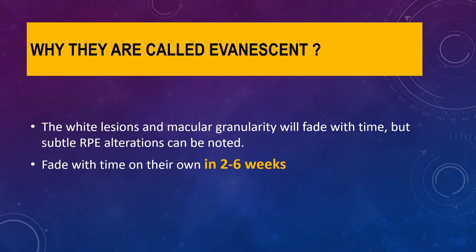The disease is called evanescent because the whitish lesions and the macular granularity fade with time. It usually takes about two to six weeks to fade; however, you may be left with subtle RPE alterations.